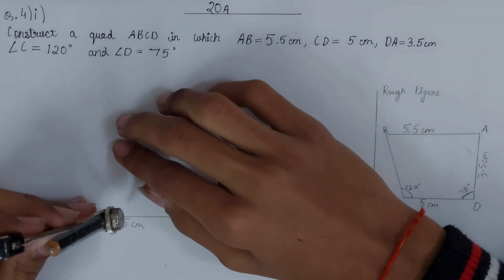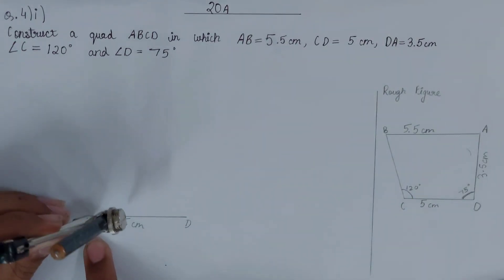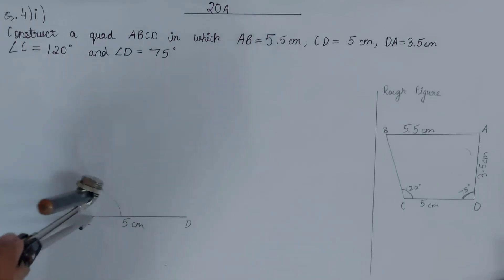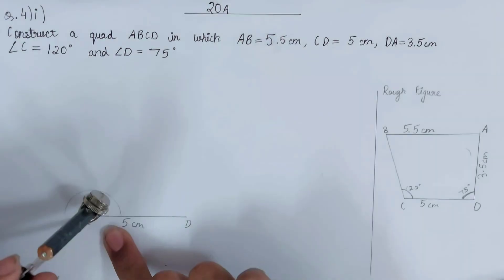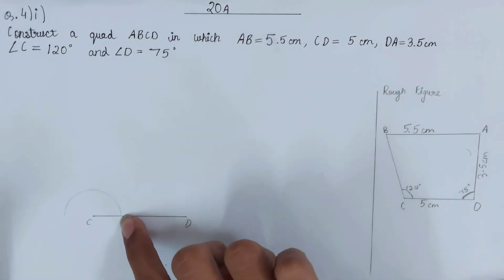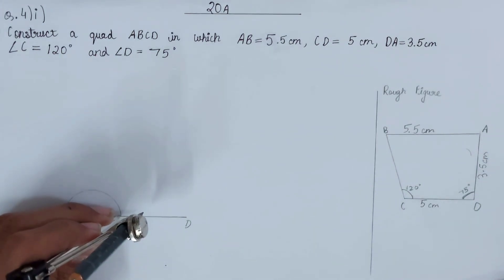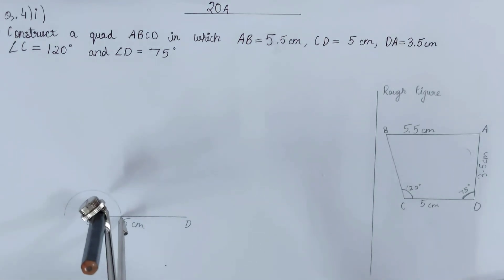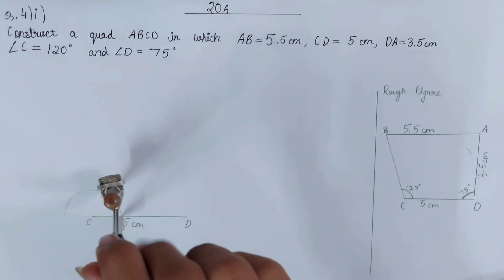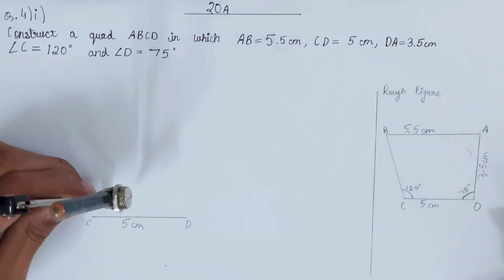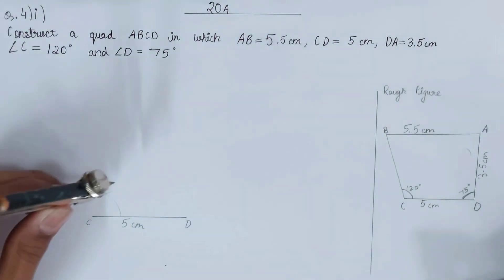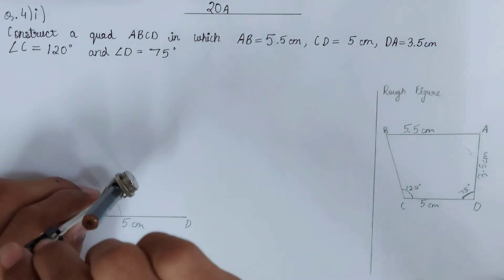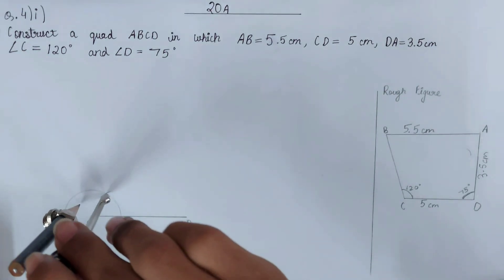To construct angle BCD of 120°, take your compass and open it to a suitable length. Place it at point C and cut an arc on CD. At the intersection point where the arc meets the line, keep the compass and draw another arc with the same radius. If we join that point we get 60°, but we want 120°, so we will double it by placing the compass again to cut one more short arc.